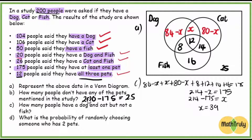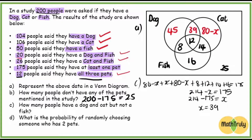We can now replace X with 39 to complete the diagram. 84 minus 39 gives us 45, so 45 people have a dog only. X equals 39, so 39 people have a dog and cat only. And 80 minus 39 gives us 41, so 41 people have a cat only. Our Venn diagram is complete.